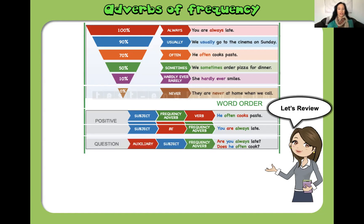Now for question order: 'Are you always late?' You notice the auxiliary 'are', then the subject 'you', then 'always' as our frequency adverb. Another example: 'Does he often cook?' We have our auxiliary 'does', our subject pronoun 'he', and our frequency adverb. So these are our word order rules for adverbs of frequency.